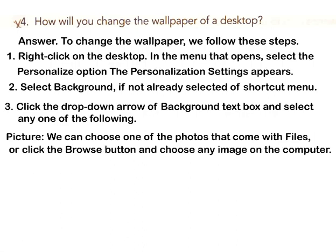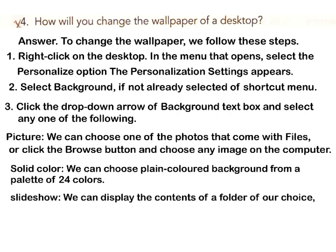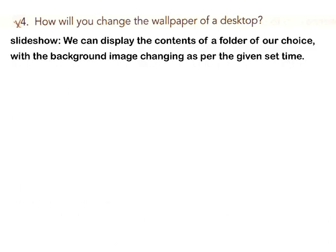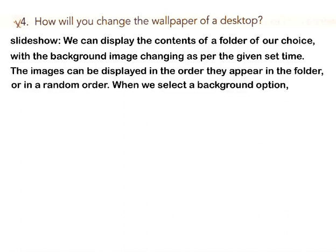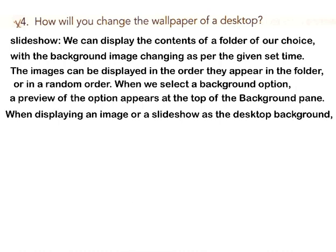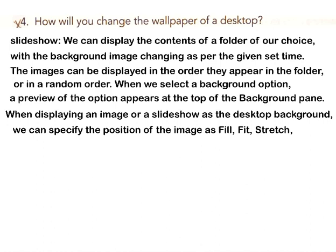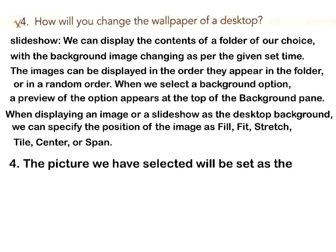The background options are: Picture — choose one of the photos that come with Windows or click Browse and choose any image on the computer. Solid Color — choose a plain colored background from a palette of 24 colors. Slide Show — display the contents of a folder with the background image changing at a set time interval, either in order or random order. A preview of the selected option appears at the top of the background pane.